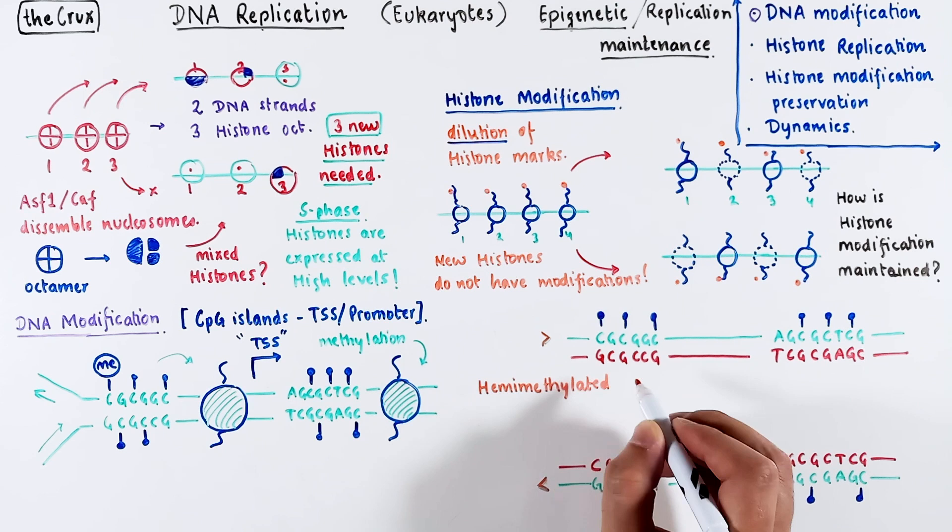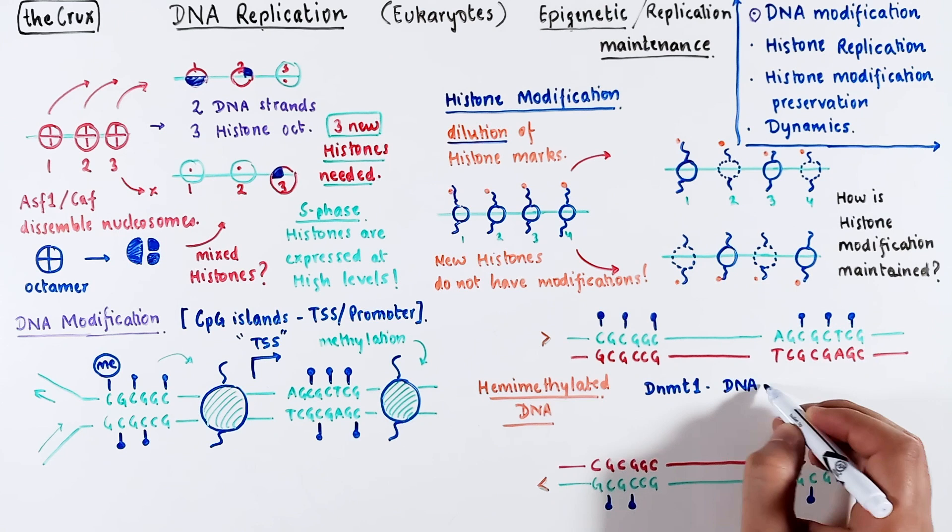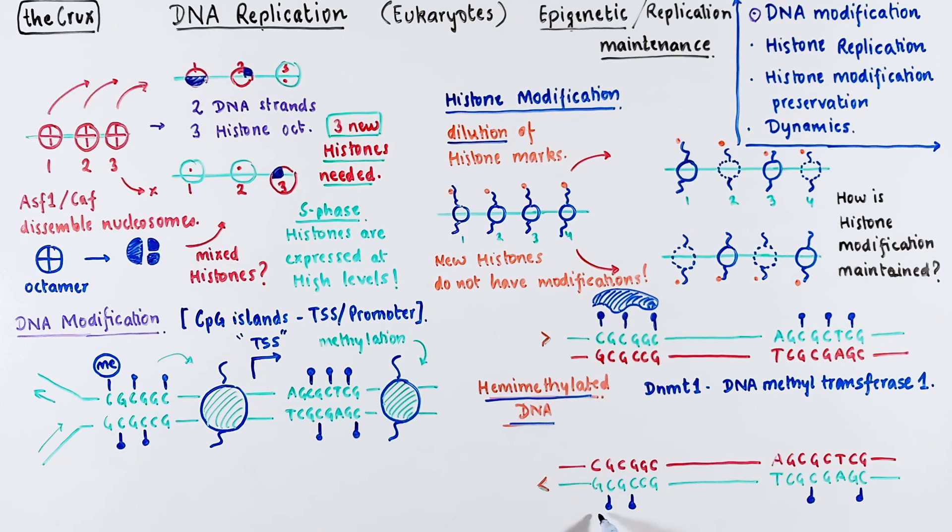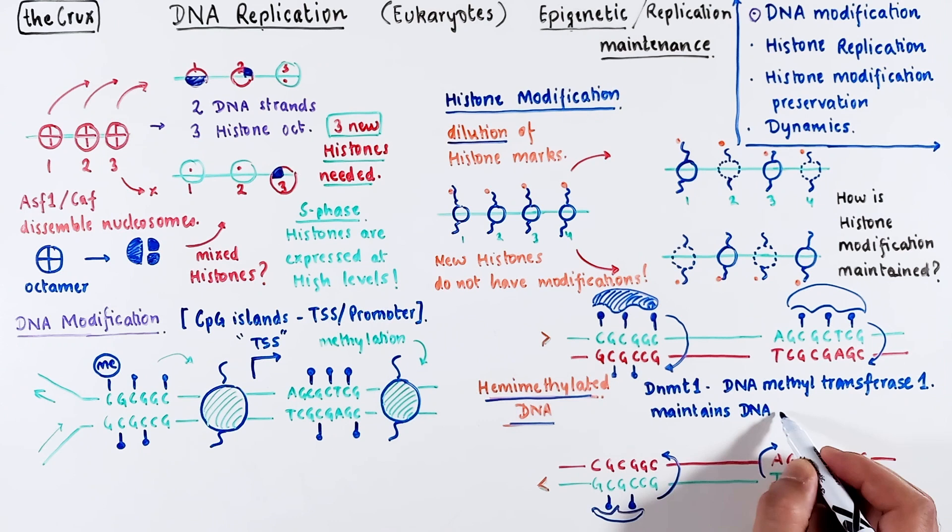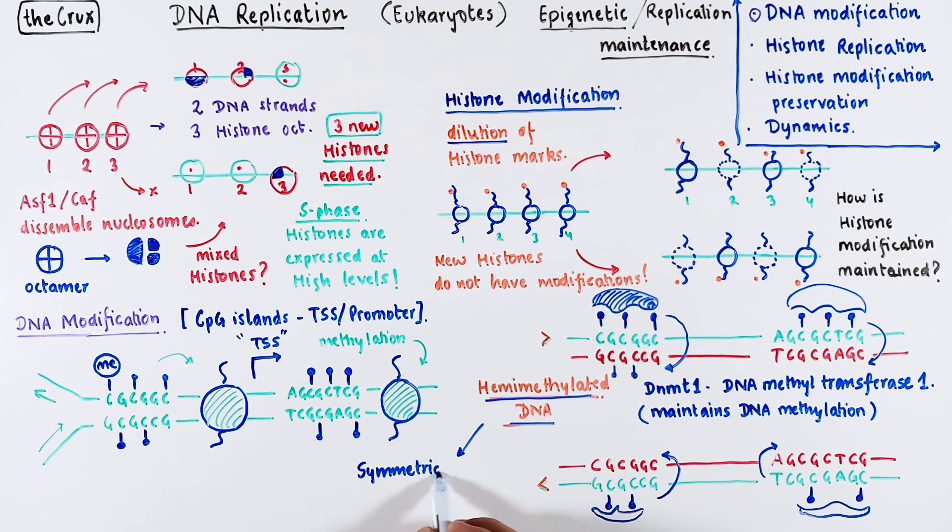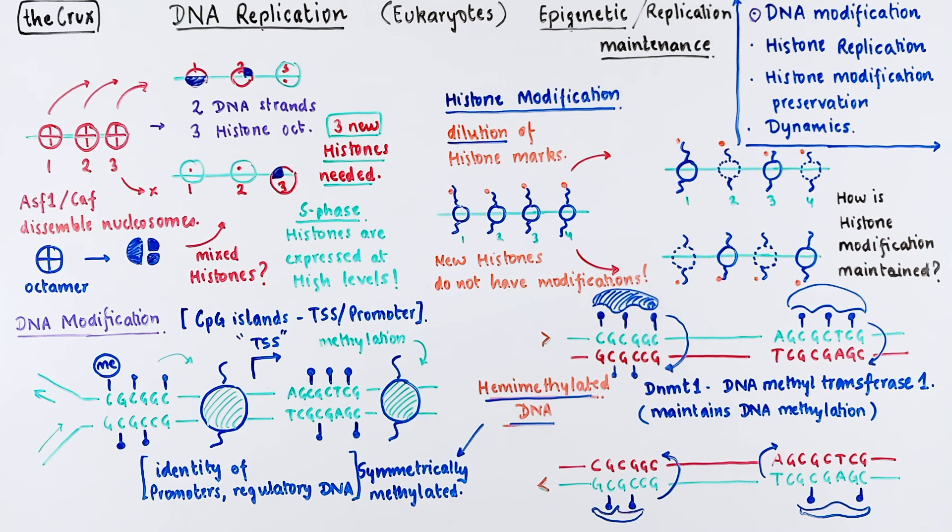Special enzymes like DNMT1, which is a DNA methyltransferase, can bind this hemimethylated DNA and transfer methyl to the cytosine on the daughter DNA. This way, the cells maintain or copy the DNA methylation at a given locus. So in effect, you convert the hemimethylated state into a symmetrically methylated state. This process then also tends to preserve the identity of the underlying feature of the DNA. This covers the first agenda.